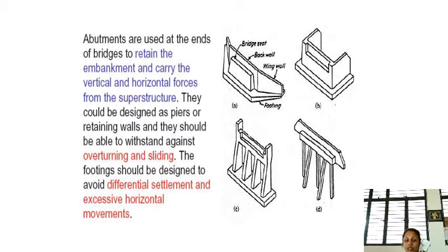Abutments are used at the ends of bridges — one purpose is to retain the embankment, and they also carry the vertical and horizontal forces from the superstructure. They can be designed as pierced or retaining walls and should be able to withstand overturning and sliding. The footing should be designed to avoid differential settlement and excessive horizontal movements, such as those caused by earthquakes or other forces.